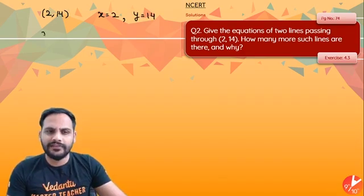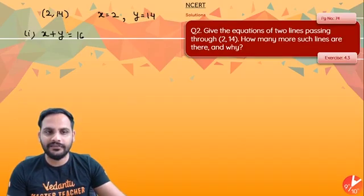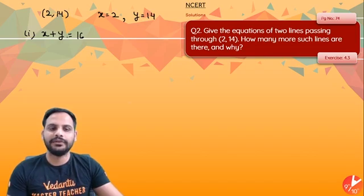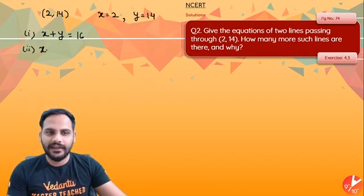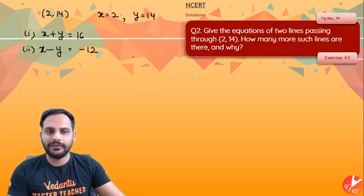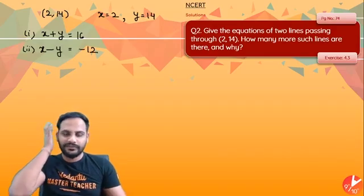So I can say suppose x plus y is equal to 16. If I put x equal to 2, y equal to 14, 2 plus 14 will be 16. Second equation I can write as x minus y, so 2 minus 14 will be equal to minus 12. So these are the two equations which will satisfy this.